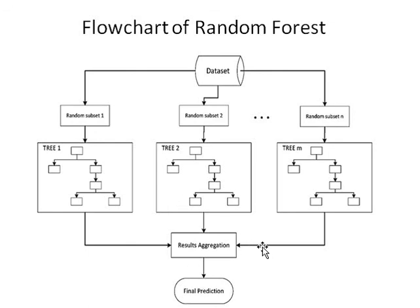Random Forest is essentially a Bagging Technique. The difference is that the Bootstrap Sample is taken the same as in Bagging, but there is also Feature Selection. We apply Decision Trees only as the base learner and obtain our optimal final model using those Decision Trees. We use Random Forest because of the problem in Bias and Variance — when we apply multiple Decision Trees, there is a reduction in variance.